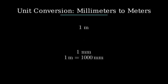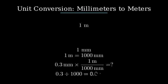In our problem, we want to convert 0.3 millimeters into meters. To do that, we multiply 0.3 by the conversion factor 1 meter over 1,000 millimeters. This effectively divides 0.3 by 1,000, giving us our answer.